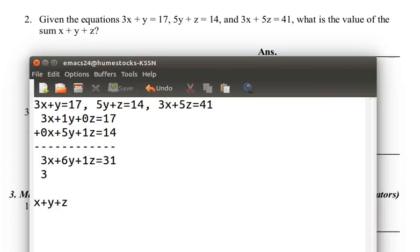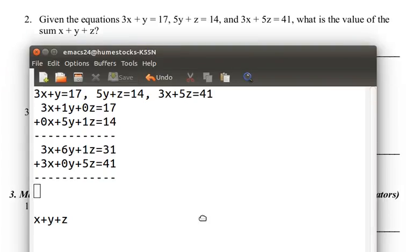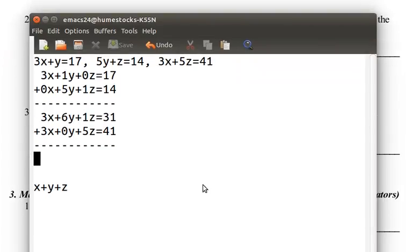Okay, so now let's add 3x plus 0y plus 5z equals 41. So 3 plus 3 is 6, 6 plus 0 is 6, and 1 plus 5 is 6, and 31 plus 41 is 72. So we're left with 6x plus 6y plus 6z equals 72.